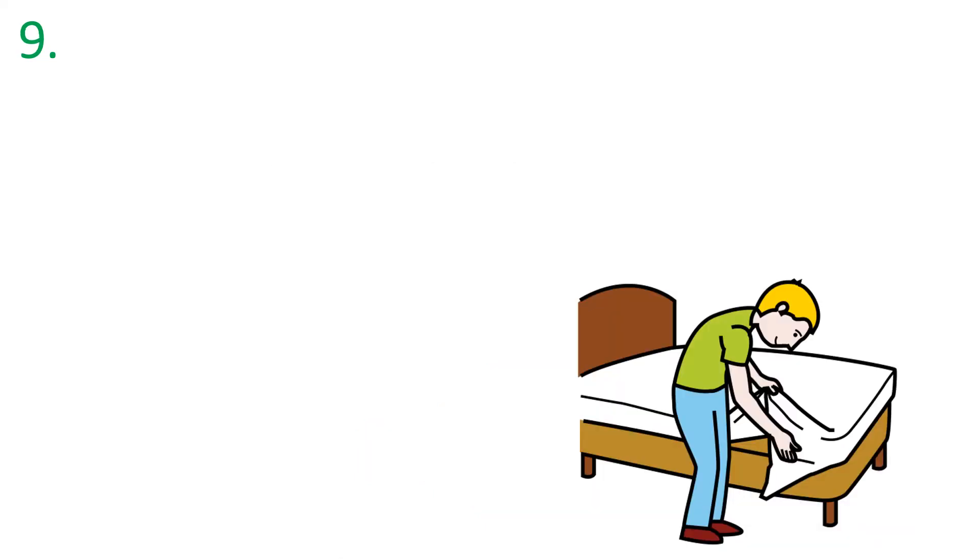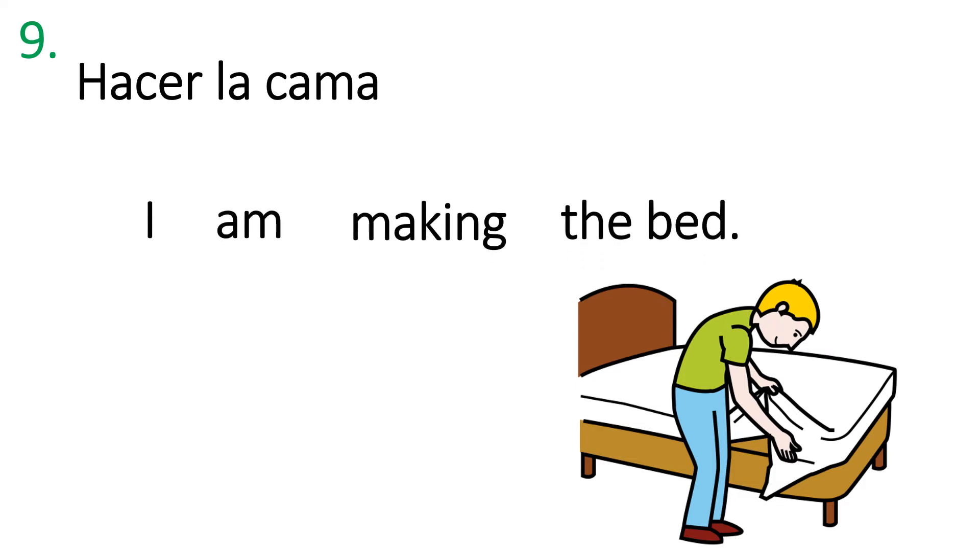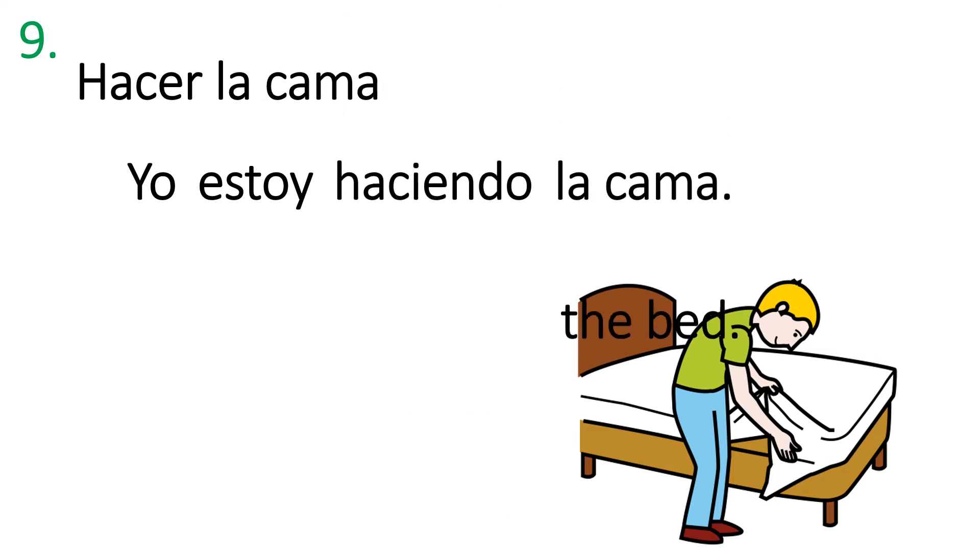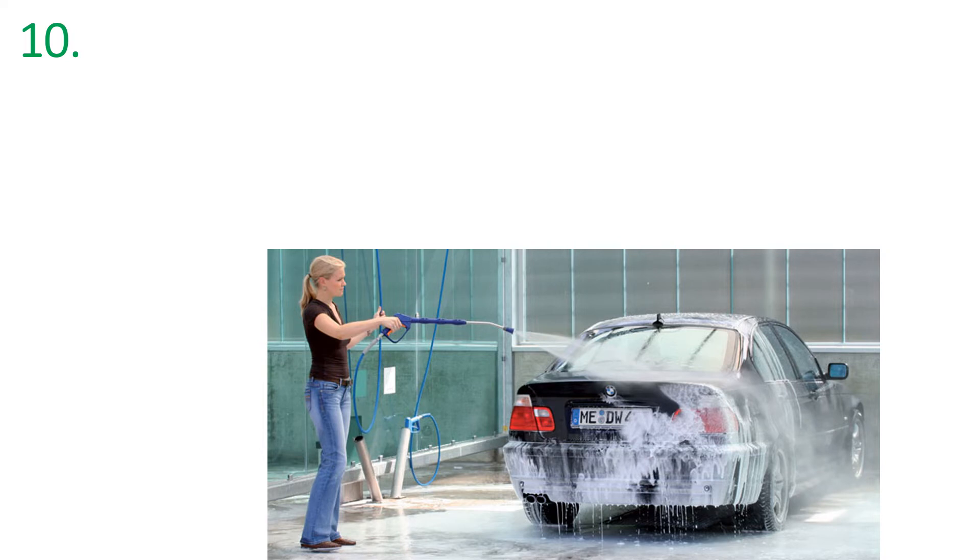All right. Nueve. To make the bed. Cómo se dice to make the bed? That's it. Same verb we saw before. Hacer la cama. Now give me this sentence. I am making the bed. Pause and write it down. Let's check it. Yo estoy haciendo la cama. There you go. Muy bien.